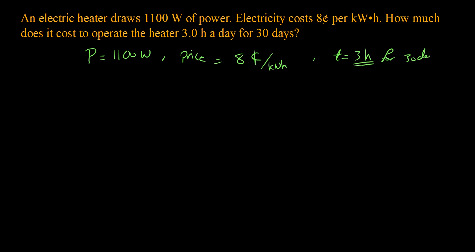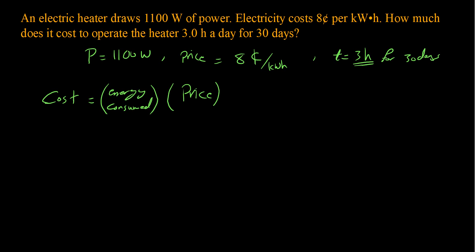I also have the time, which is 3 hours for 30 days. To find the cost I need the energy consumed multiplied by the price. The energy consumed must be in kilowatt hours, but we don't have it directly in the given information, so let's calculate the energy consumed.